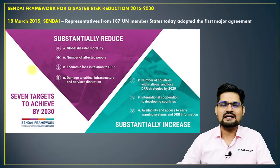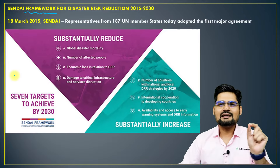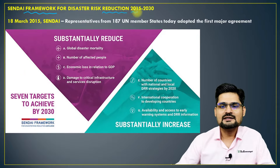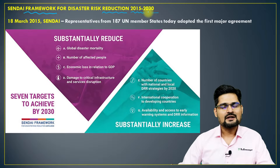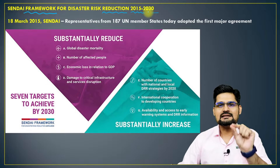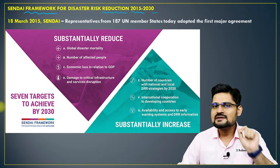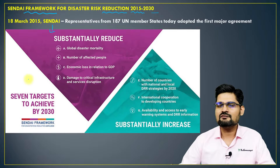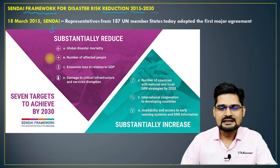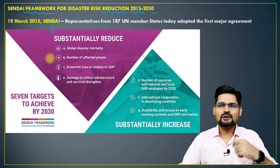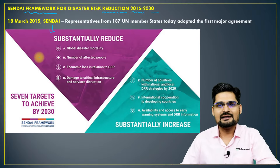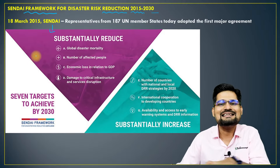In 2015, a framework called the Sendai Framework for Disaster Risk Reduction was made, covering 2015 to 2030. It has certain agendas and points to look into. Under this framework, we have to reduce certain things and increase certain things for sustainable living and a less risky society.